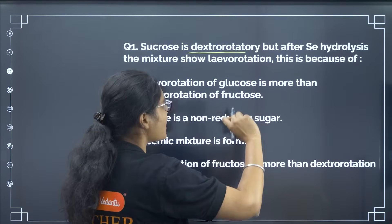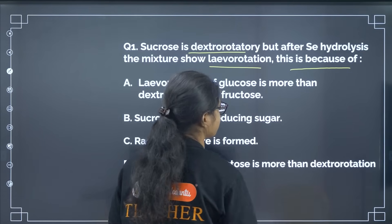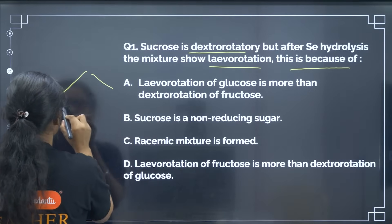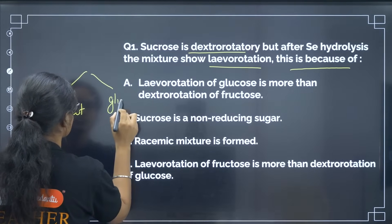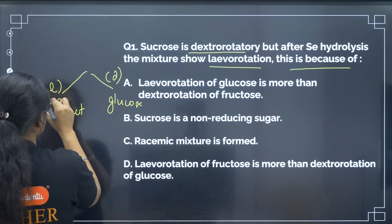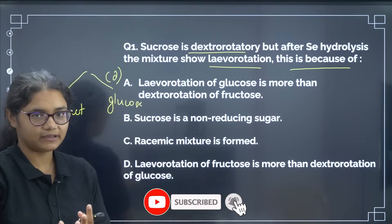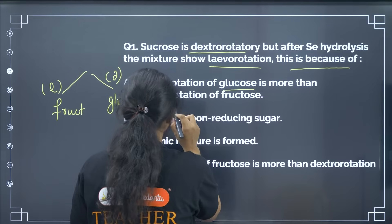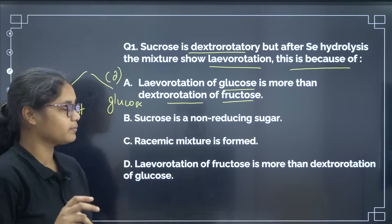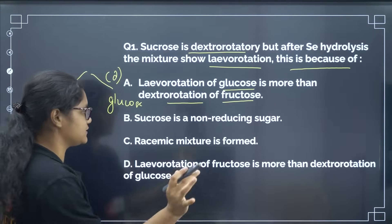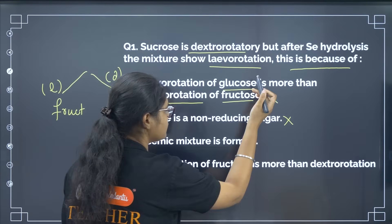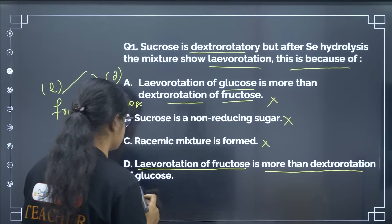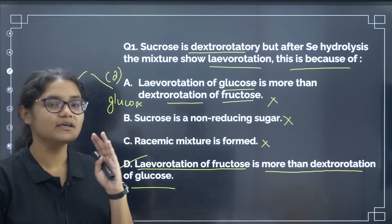Sucrose is dextrorotatory but after hydrolysis the mixture shows levorotation — this is because of what? When sucrose undergoes hydrolysis it gives glucose and fructose. Glucose is dextrorotatory whereas fructose is levorotatory. If the mixture is becoming levorotatory, that means the levorotation of fructose is more than the dextrorotation of glucose. So the correct answer for this question is option number D.